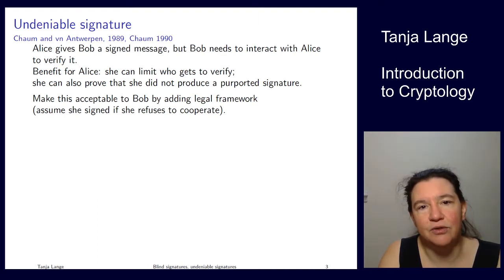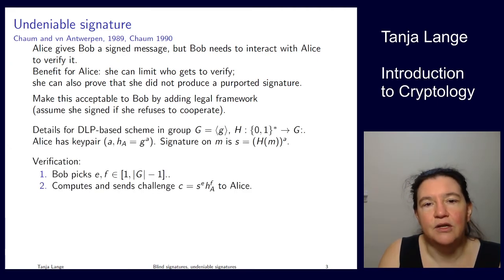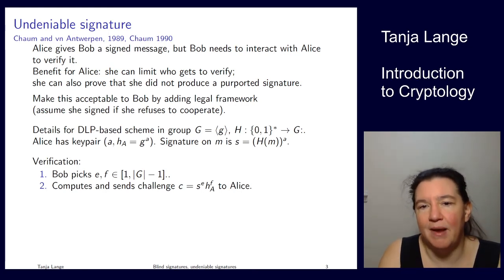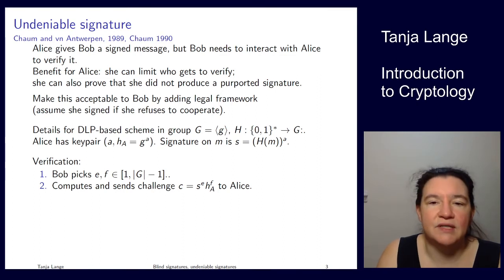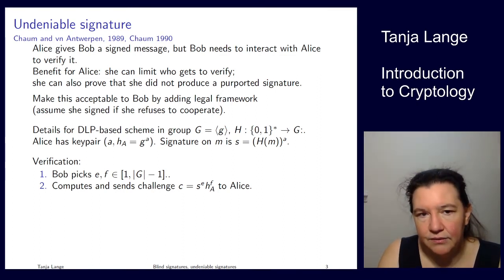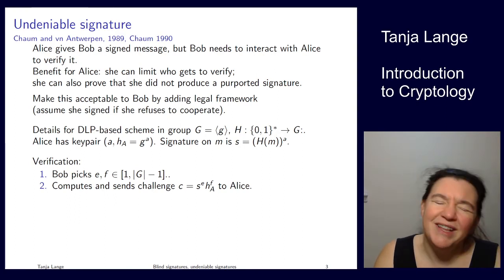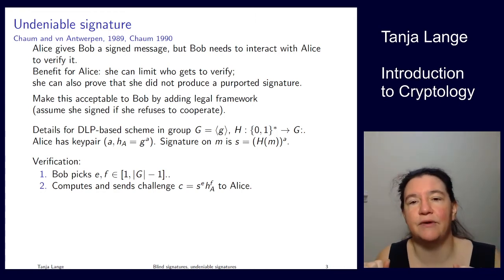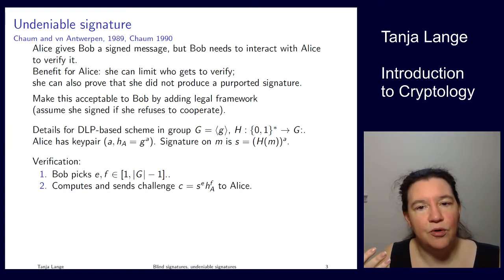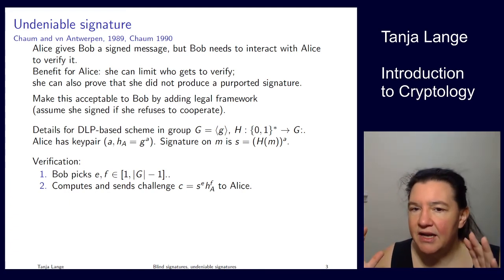I'll show a construction from Chaum from 1990 that achieves this, in the discrete logarithm setting. We have a group generated by lowercase g, and a hash function that maps into this group. For a finite field or a subgroup of a finite field it's straightforward to find such a hash function. We also have a standard discrete log key pair.